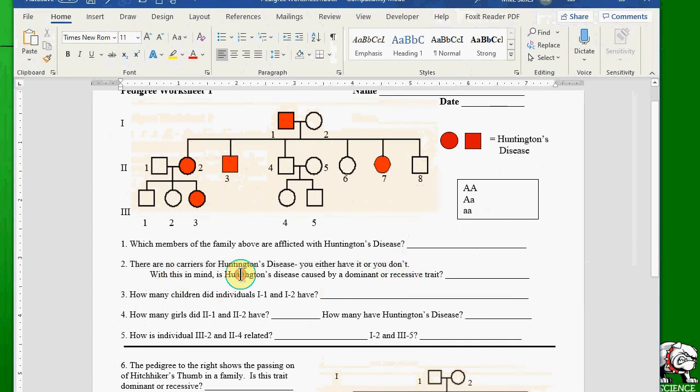With that in mind, is Huntington's disease caused by a dominant or recessive trait? Our next lesson is about using pedigree charts with dominant and recessive traits, and we'll be looking at sex-linked traits as well, and this is where things get more complicated.